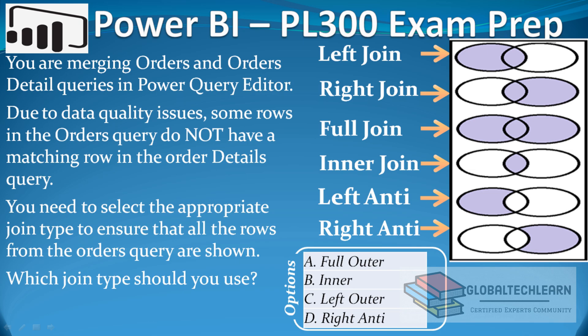On the right side in the image, we can see various types of joins. In each type, we have two tables represented by circles, where each circle represents one table. The first join type is Left Join, where all the data from the left table is returned. The next is Right Join, where all the data from the right table is returned. Then we have Full Join, where all records from both left and right tables are returned. Next is Inner Join, where only the matching data from both tables is returned — shown as the overlapping portion of the circles.